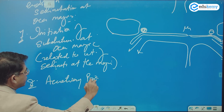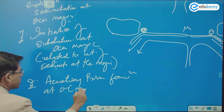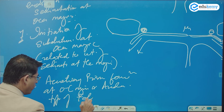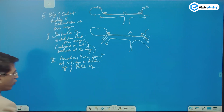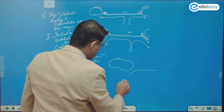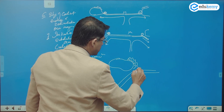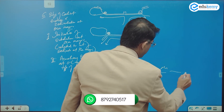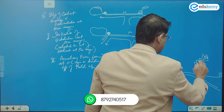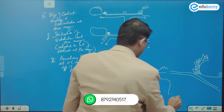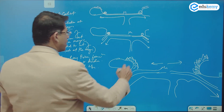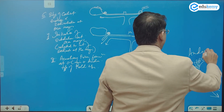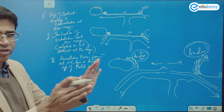Stage eight is accretionary prism formation at ocean margins and the development of Andean-type fold mountains. Subduction is ongoing, producing the accretionary prism which becomes the Andes-type mountains on the continental margins, along with mélange formation.